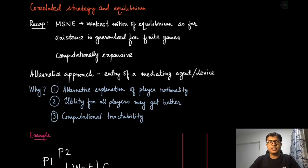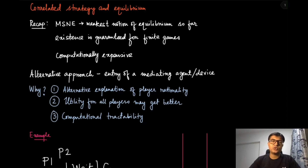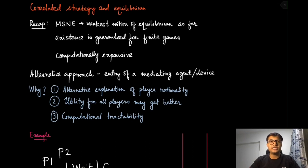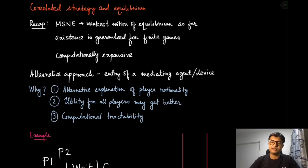So far we have only considered strategies which are picked by the individuals themselves. We have talked about pure strategies and mixed strategies, but those were picked by the players themselves. We have seen several kinds of equilibrium concepts involving those strategies. Now in this module we are going to discuss a slightly different strategy which is not picked by one individual agent, rather it is collectively decided via a device which we are going to call a mediating device.